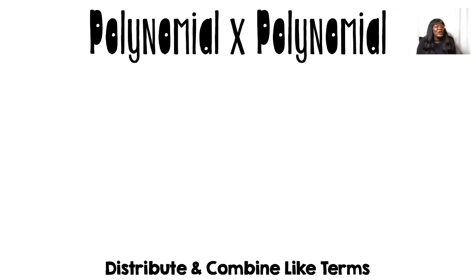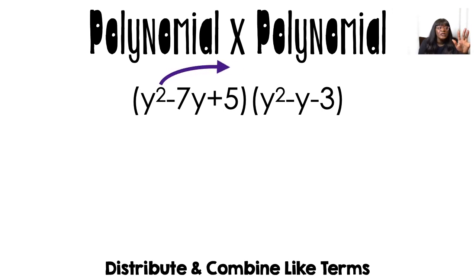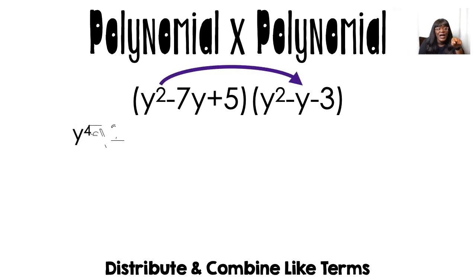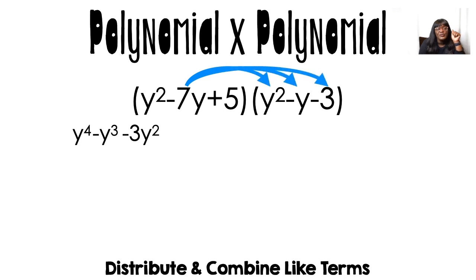Now we're going to do a trinomial times a trinomial, and this is about to get long because I have to distribute everything in the first set of parentheses — the y squared, the negative 7y, and the 5 — to everything in the second set: y squared, negative y, and negative 3. So y squared times y squared gives me y to the fourth, y squared times negative y gives me negative y cubed, and y squared times negative 3 gives me negative 3y squared. Then I move on to the middle term: negative 7y times y squared gives me negative 7y cubed.